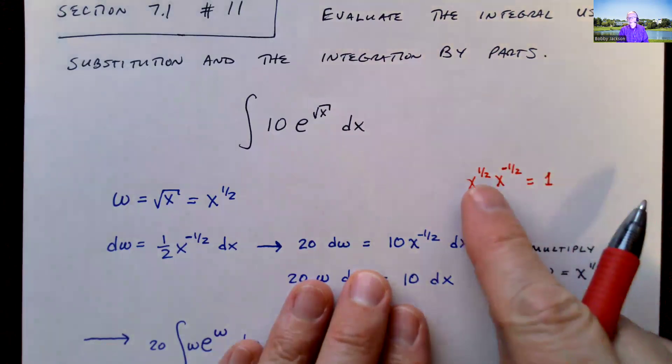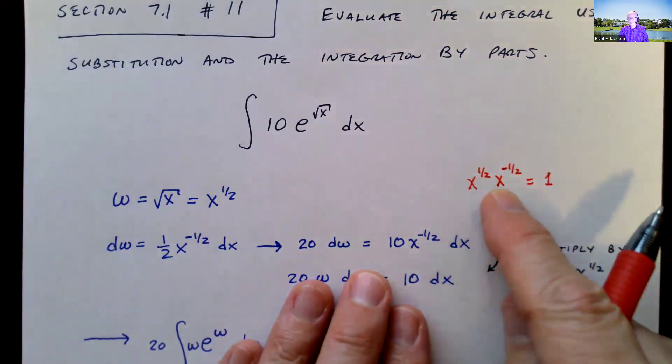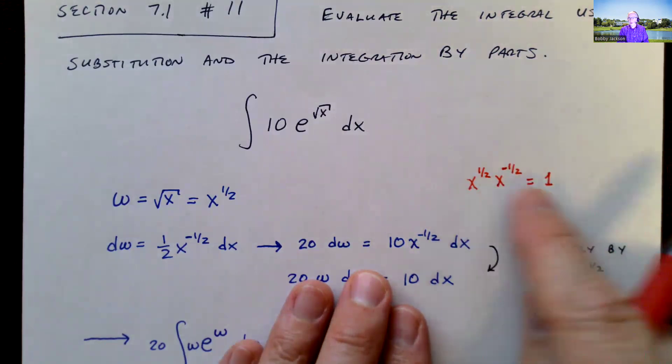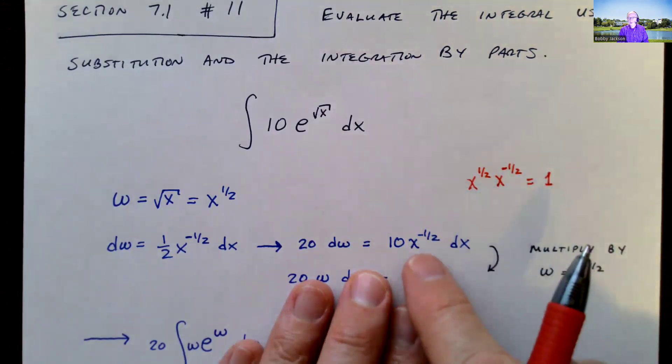x to the one-half times x to the negative one-half is 1, right? If you think about it, this is the reciprocal of x to the one-half, 1 over x to the one-half. So that is equal to 1. Or just add the exponents, and you get x to the zero, which is 1. So I'm going to multiply by that.